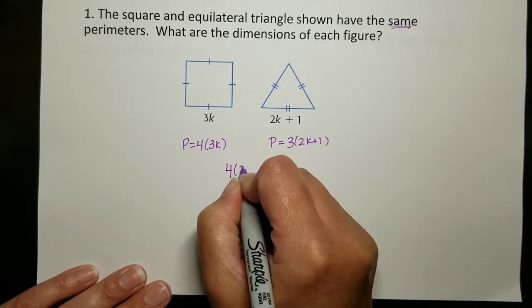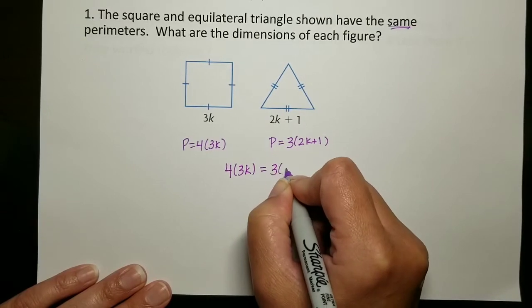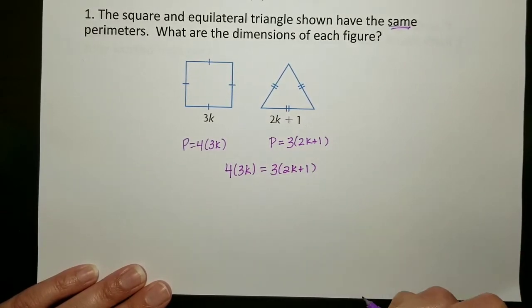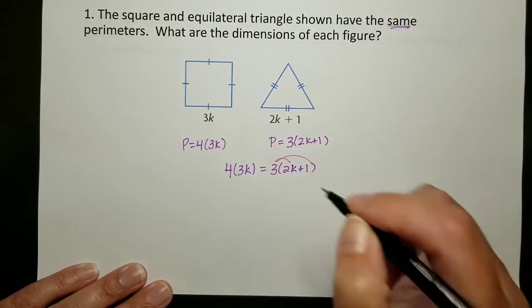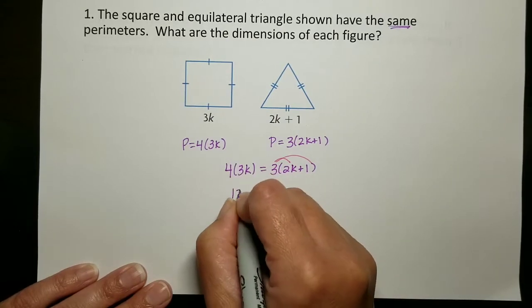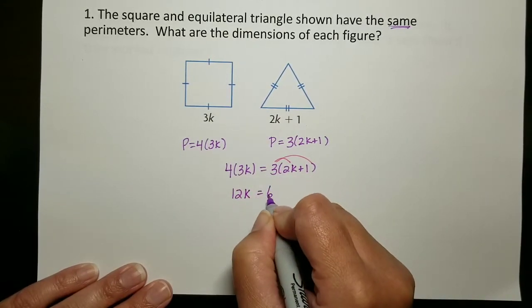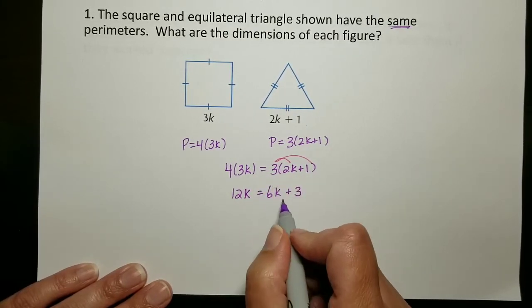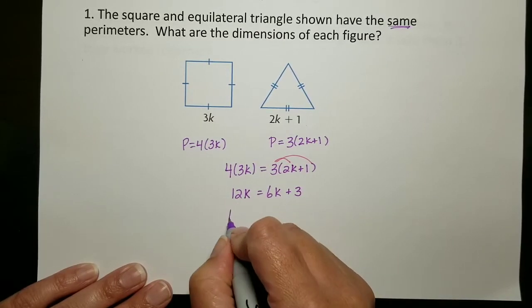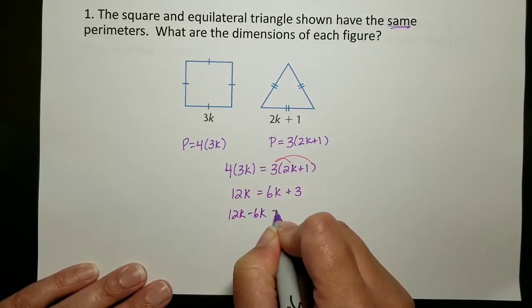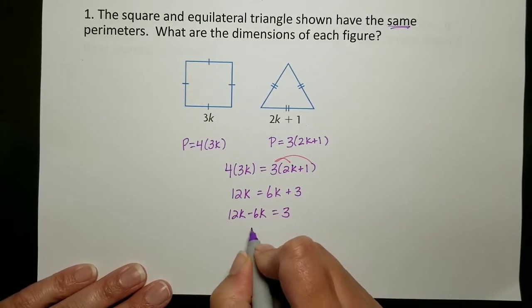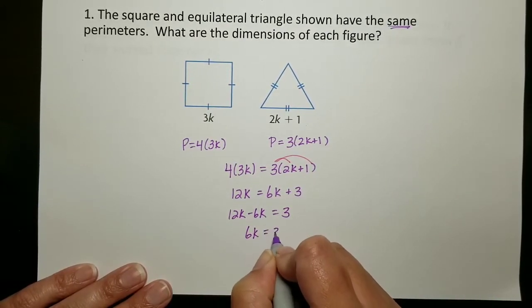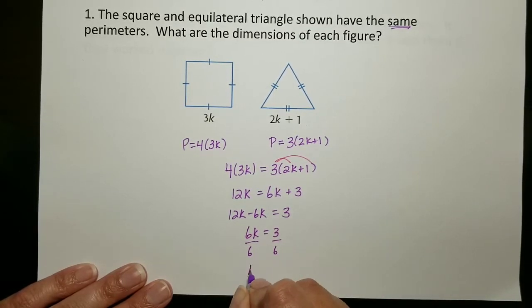So I know that 4 times 3k equals 3 times 2k plus 1, and I'm going to go through and solve. Make sure that you're careful when you're multiplying those monomials in. So on the left I get 12k. On the right I get 6k plus 3, not just plus 1. Now I'm going to get variables to the left, so I get 12k minus 6k equals 3.